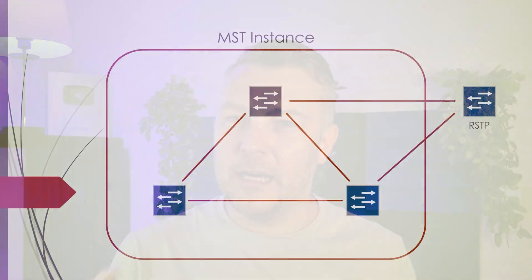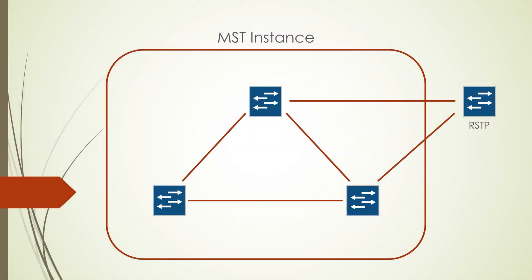However, on the other hand, each switch has to map VLANs to these instances. This VLAN-to-instance mapping is done on each switch, and this information is not shared between switches. So in that sense, yes, this part of multiple spanning tree is configured locally, and that has to be done on each switch.